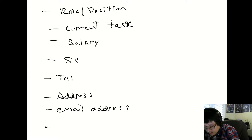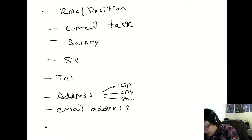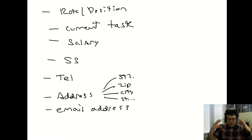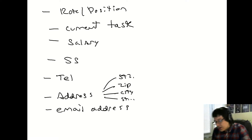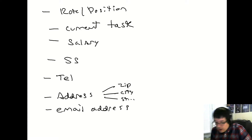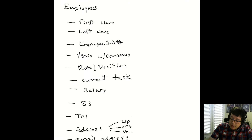The address itself would probably be split into zip code, city, and street. Maybe a second street line for apartment numbers. So this is quite varied information to store.